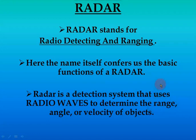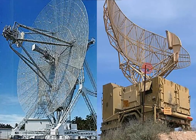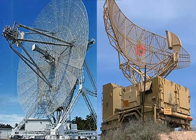Here are some examples of what a radar looks like. Radar systems are very large, big objects — not simple like a small antenna. This is one kind of radar which is circular in shape, and this is another kind which is parabolic in shape. There are a lot of types of radar which we will discuss in future sessions. These are a couple of examples of how a radar looks.